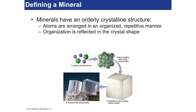What I mean when I say crystal structure is that the atoms are arranged very orderly. This is an example — this is a crystal of halite, which is table salt. It's composed of sodium ions and chlorine ions arranged in a very three-dimensional matrix, so that the small sodiums are actually fitting in the cracks between the chlorines.